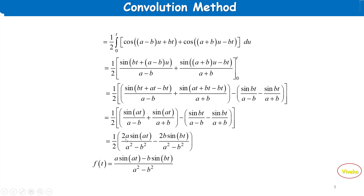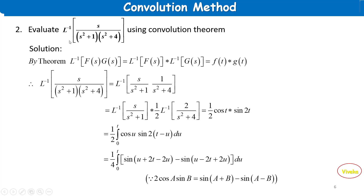Simplifying further: (2a·sin(at) − 2b·sin(bt)) / (a²−b²), and the (1/2) cancels. So the final answer: f(t) = (a·sin(at) − b·sin(bt)) / (a²−b²).